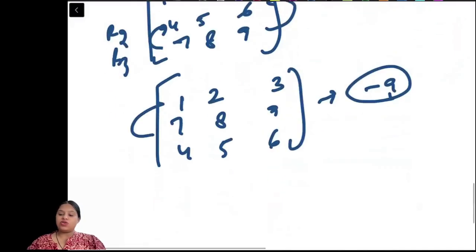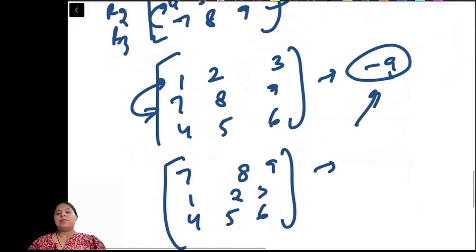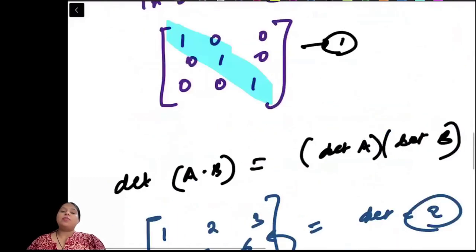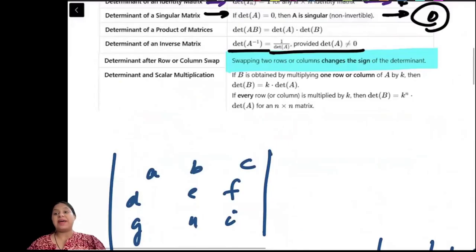If you swap again, putting 7, 8, 9 on top, 1, 2, 3 at the bottom, and 4, 5, 6 in the middle, it will multiply by negative again and become A. So the number of times you keep swapping, you will every time multiply the determinant with minus 1.